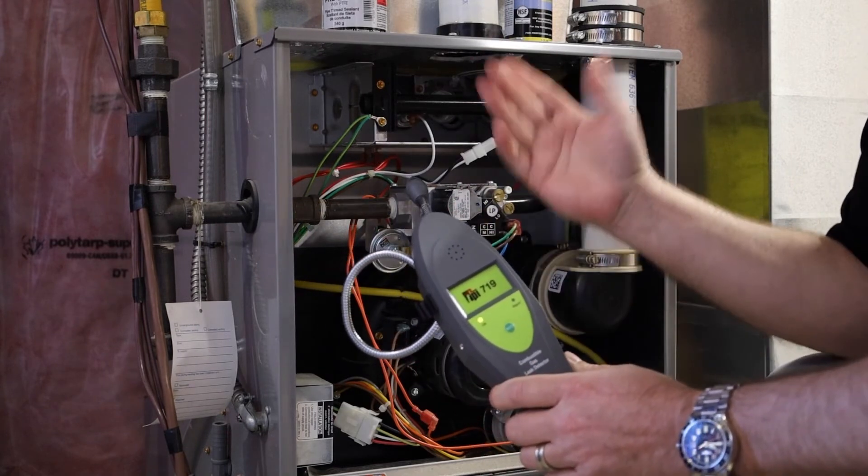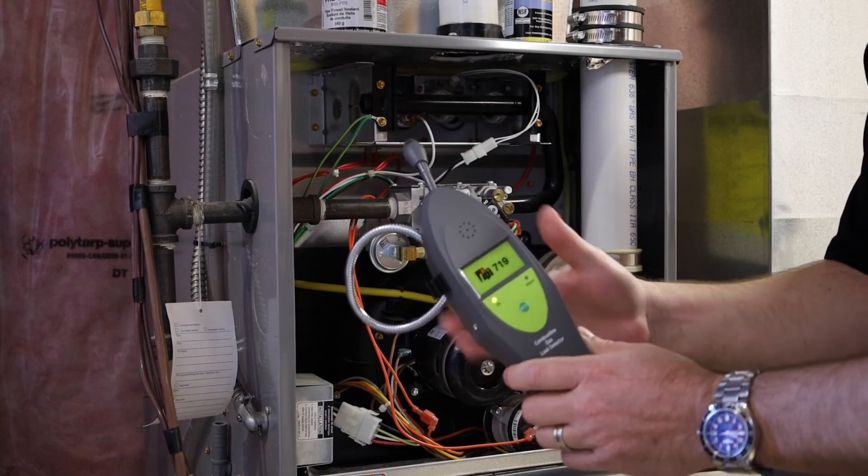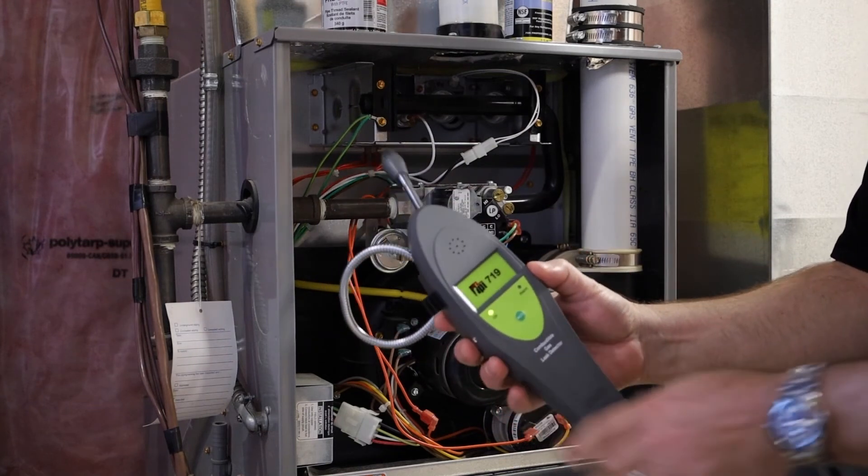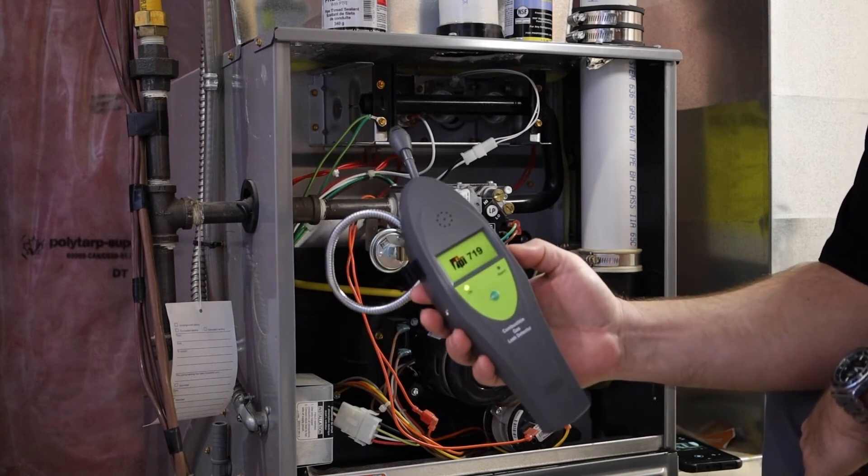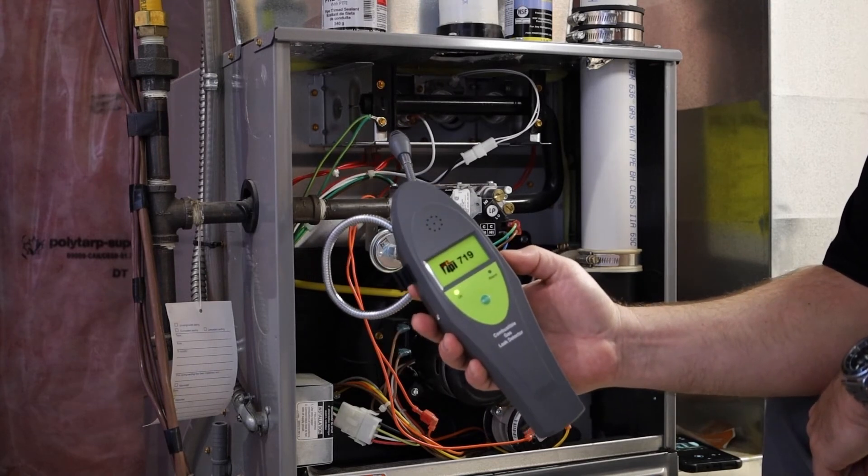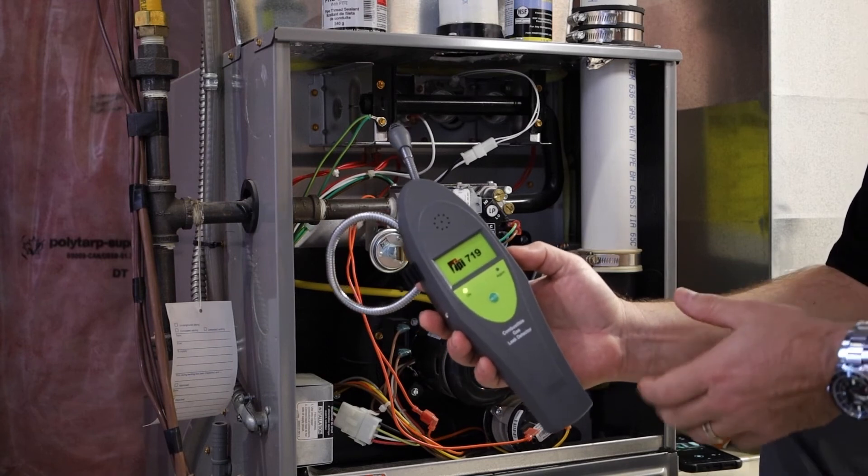And again, working with fresh pipe dope, you could do the same thing. Hold it above the jar of your pipe dope, zero it out and continue looking for your leaks. That's the 719 combustible leak detector. Again, we'll do all your combustible gases.